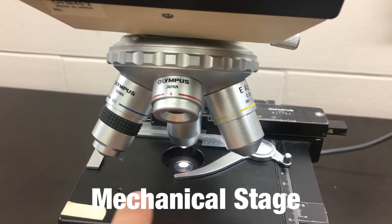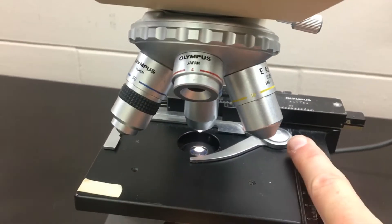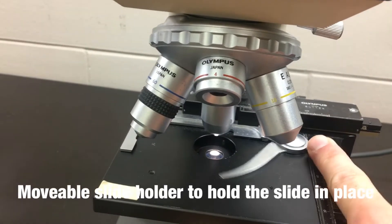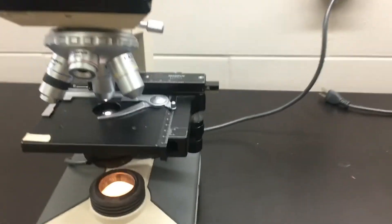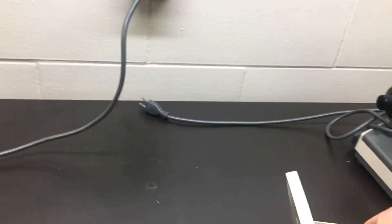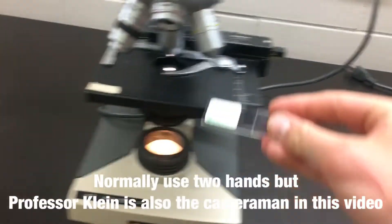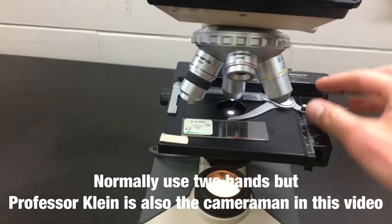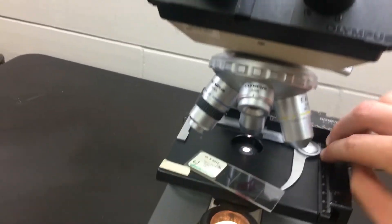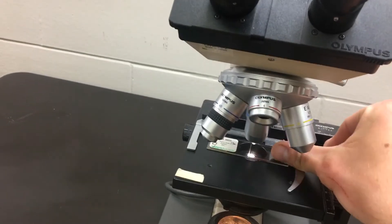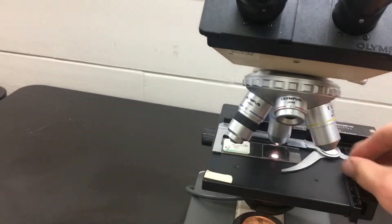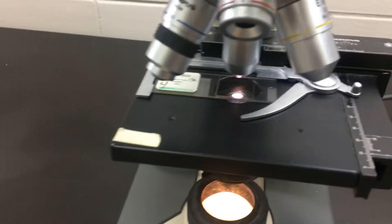So this is the stage right here with a clip that can pull back. Now we want to take a microscope slide and you'll take it preferably with two hands, slide it in and let it lock in place.